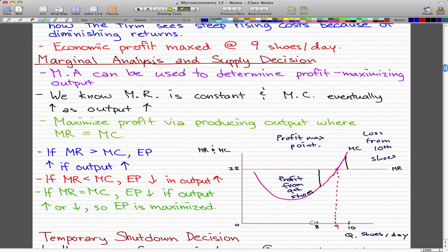When we are producing at a quantity of 8 shoes per day, we know that from producing one more shoe, we will profit. Let's just highlight that here.